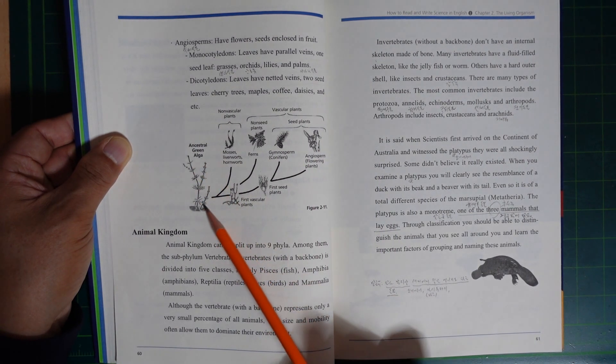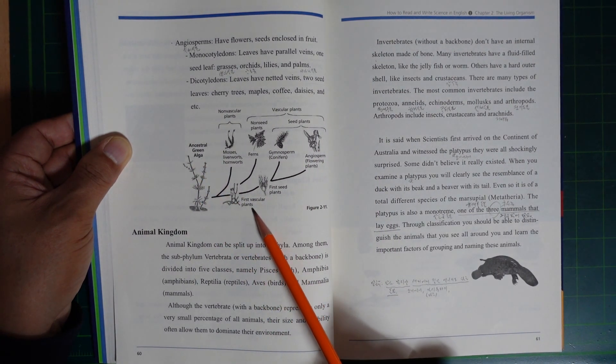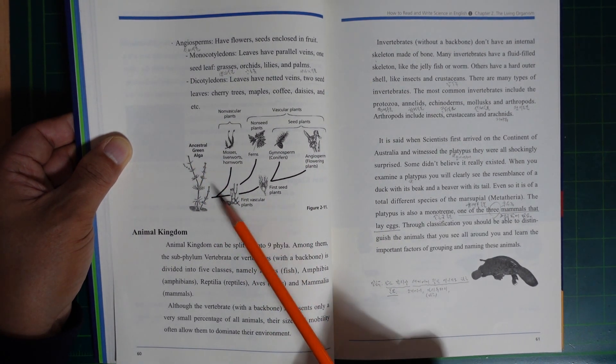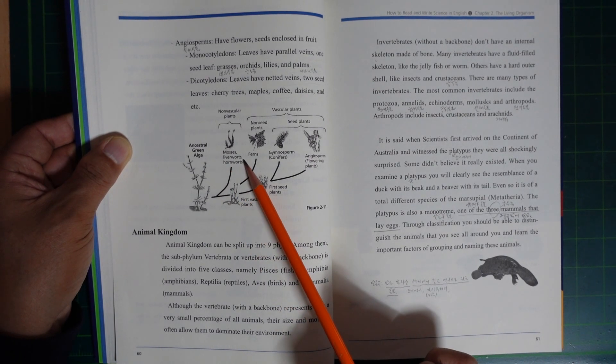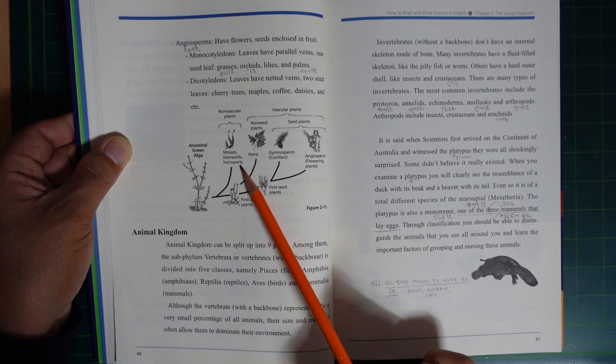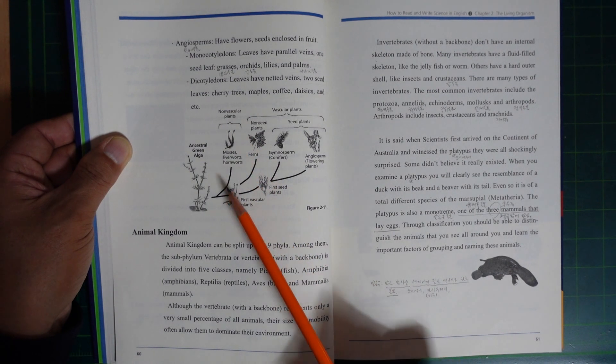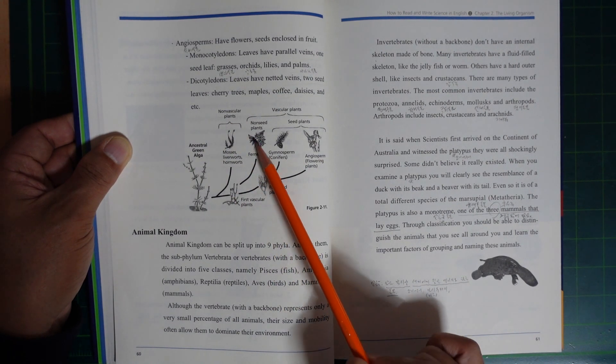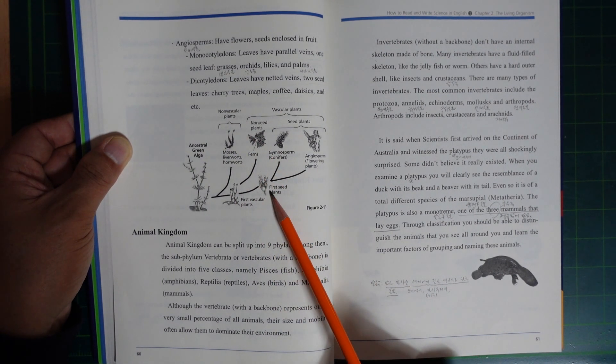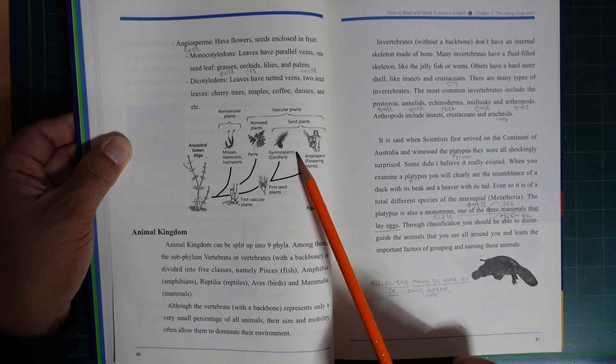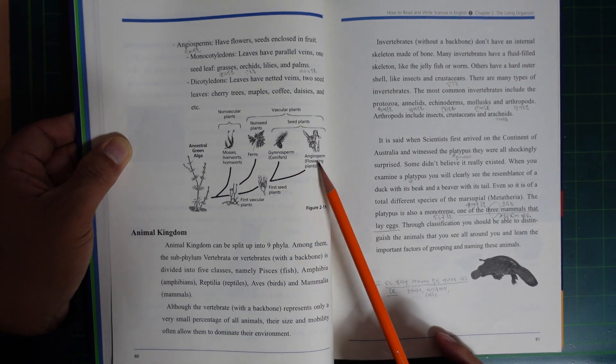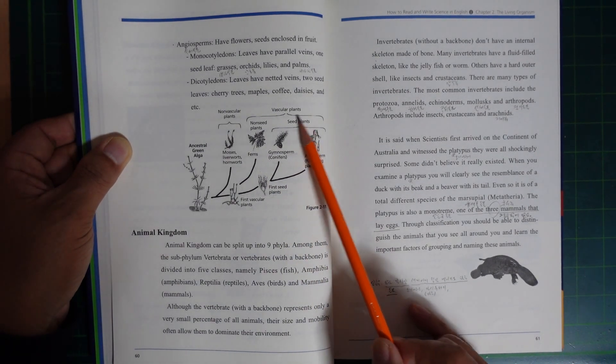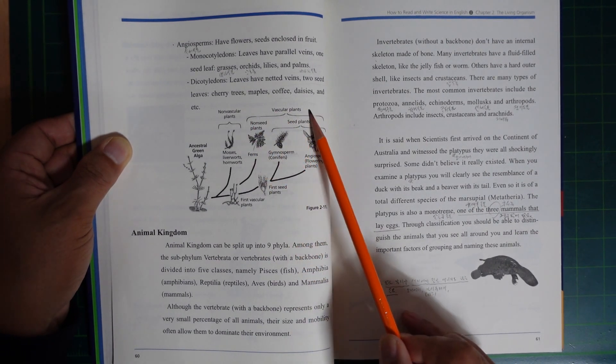Ancestral green algae led to the first vascular line, then the first seed plant. Evolution progressed through mosses, liverwort, hornwort, non-vascular plants, ferns, gymnosperms like conifers, and angiosperms or flowering plants, all part of the vascular plant lineage.